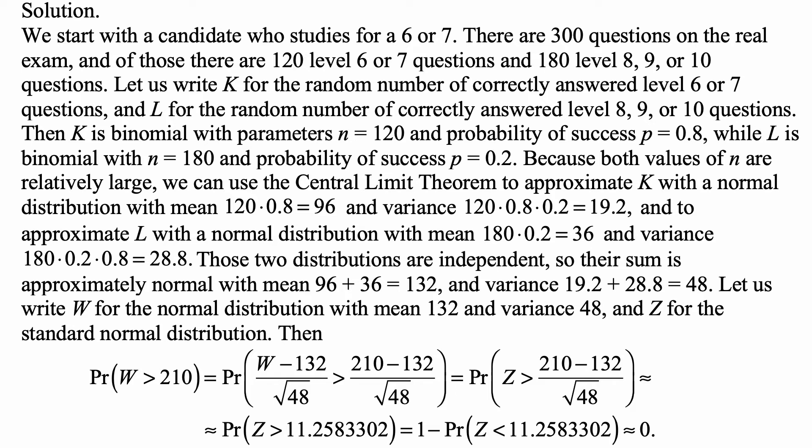Because both values of n are relatively large, we can use the Central Limit Theorem to approximate K with a normal distribution with mean 120 × 0.8 = 96, and variance 120 × 0.8 × 0.2, which is 19.2, and to approximate L with a normal distribution with mean 180 × 0.2, which is 36, and variance 180 × 0.2 × 0.8, which is 28.8. Those two distributions are independent, so their sum is approximately normal with mean 96 + 36 = 132, and variance 19.2 + 28.8, which is 48.